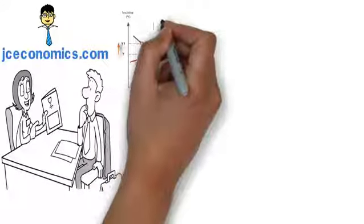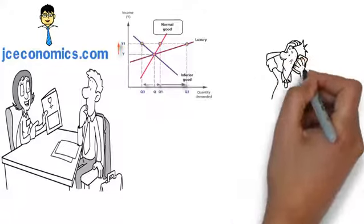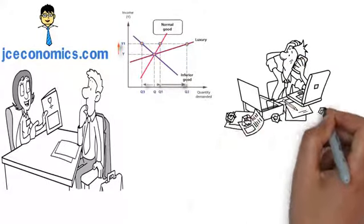The first factor is the degree of necessity. The more basic the item is, the less income elastic is the demand.